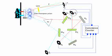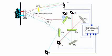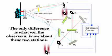If a photon makes it to D1 or D2, they always display an interference pattern. Yet every time a photon hits D3 or D4, a clump pattern is formed. But the only difference is what we, the observers, know about these two stations.